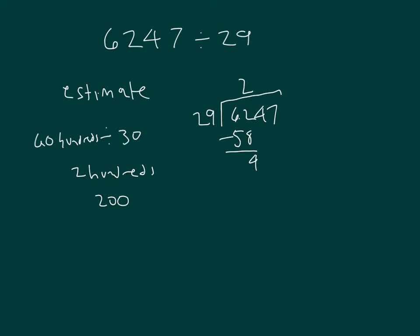And we regroup that with the four tens, so we have forty-four tens that we're dividing by twenty-nine, which is one. Then we have the ones to bring down. One hundred fifty-seven ones divided by twenty-nine.